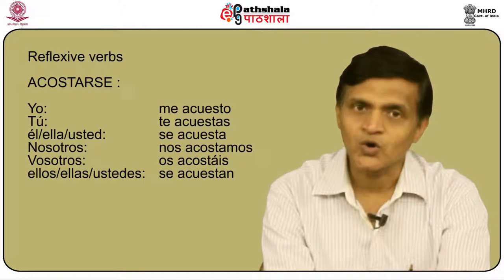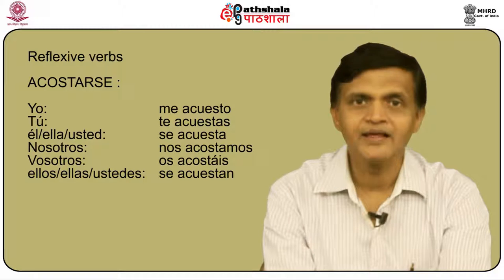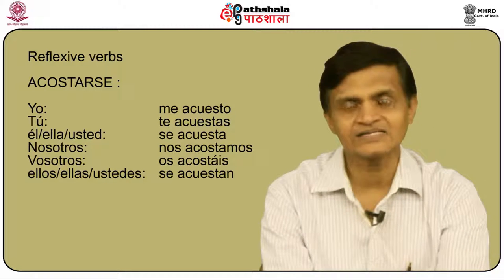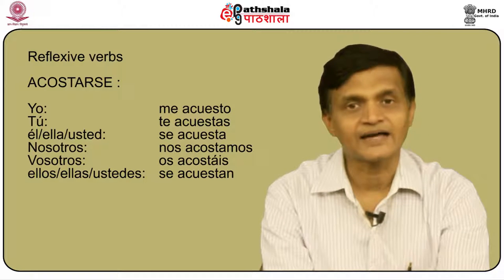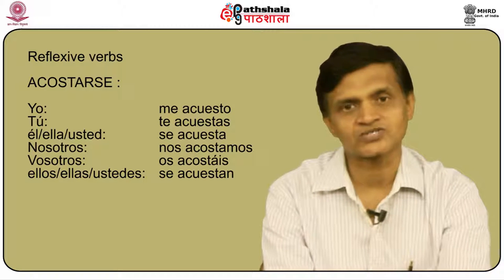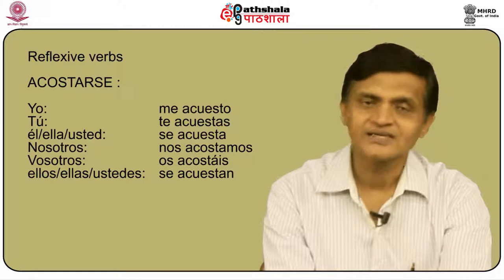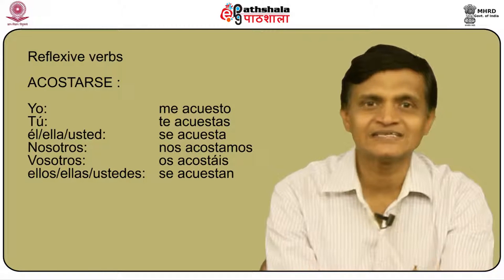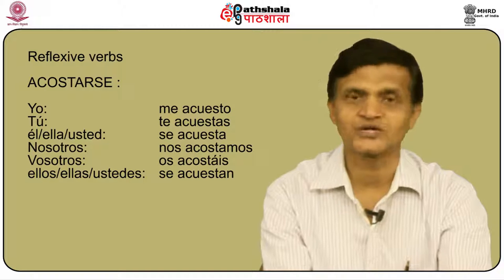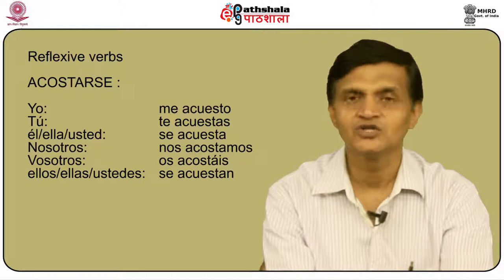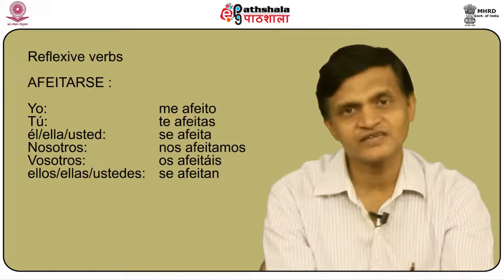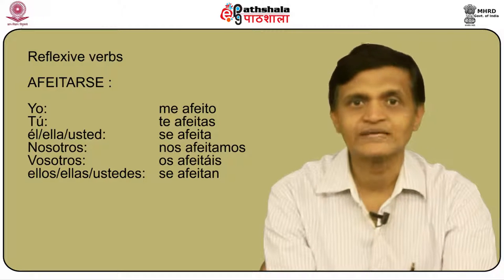Let us talk first about reflexive verbs. Reflexive verbs like acostarse are conjugated in the following manner: yo me acuesto, tú te acuestas, él/ella/usted se acuesta, nosotros nos acostamos, vosotros os acostáis, and ellos/ellas/ustedes se acuestan. Remember that 'me acuesto' is an integral unit — you cannot put anything in the middle or remove 'me' from 'acuesto'.